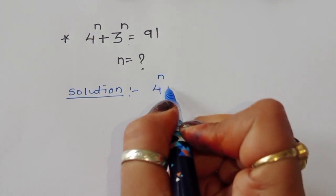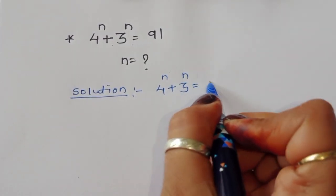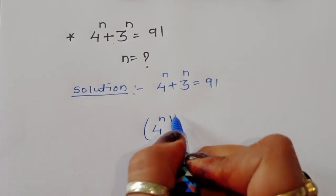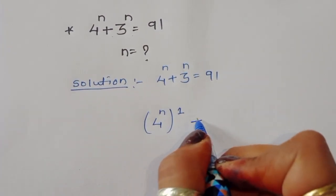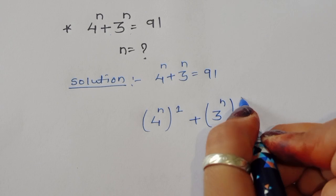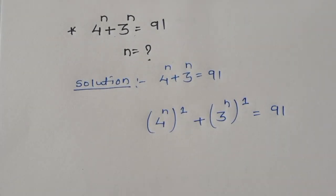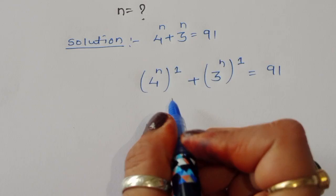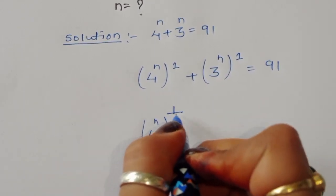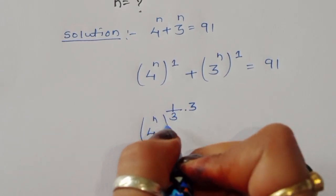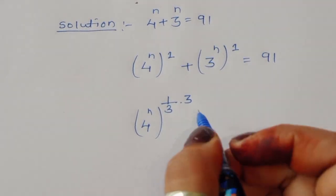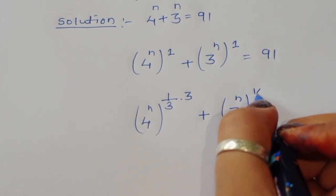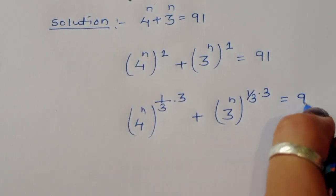4^n + 3^n = 91. We can write 4^n as 4^(n · 1) and 3^n as 3^(n · 1). In place of 1, we can write (1/3) × 3, so 3 cancels from the right, leaving the value the same. So we write 4^(n · 1/3 · 3) + 3^(n · 1/3 · 3) = 91.